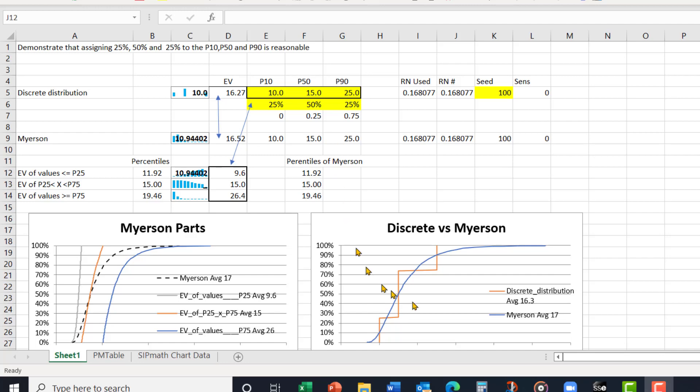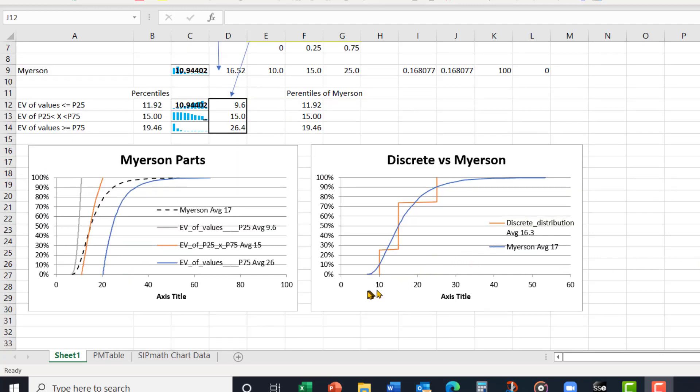And that results in the orange line shown down here. You can see the 25, 50, 25, and the values that we discussed up above.